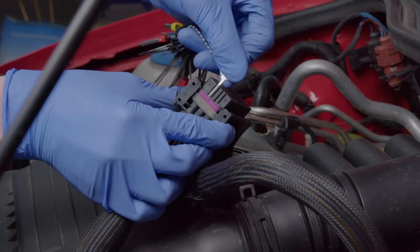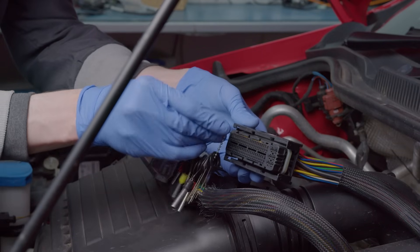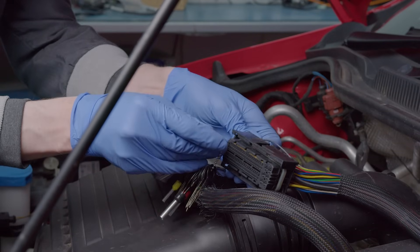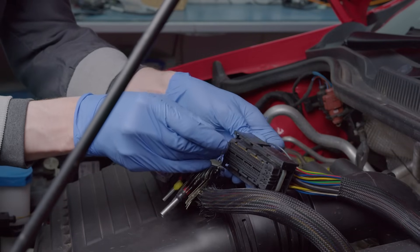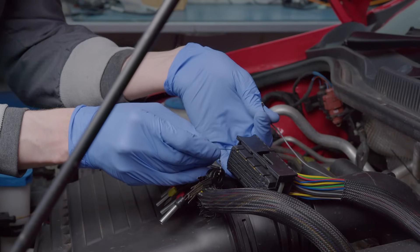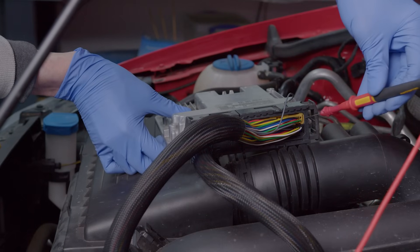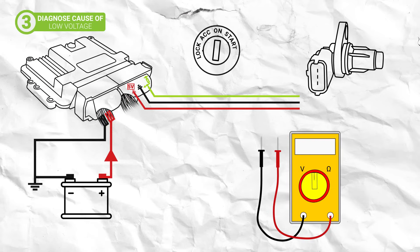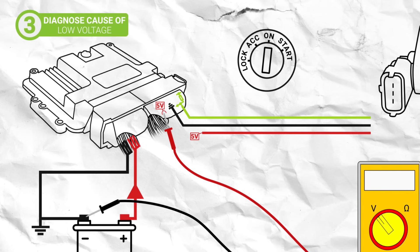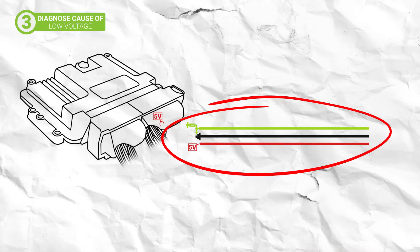Start by removing any secondary lock or barrier on the connector. Then insert your terminal removal tool to the affected terminal. Press it all the way in whilst wiggling the wire free at the back. Once it is removed, plug the ECU connector back in, turn the ignition on and check the voltage at the ECU. If the reading is now good, then you can determine the fault is within the loom, which will need to be repaired.